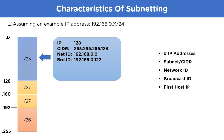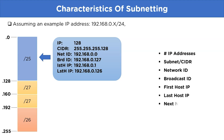The next attribute is the first host ID — the first ID after the network ID — which is 192.168.0.1. Then we have the last host ID, which is 192.168.0.126, just before the broadcast ID. And lastly the next network ID, which is 192.168.0.128.